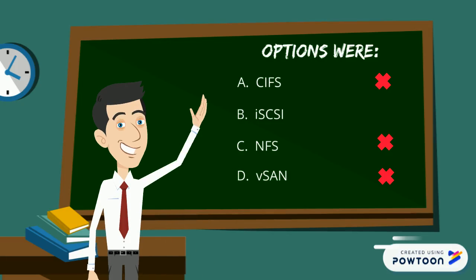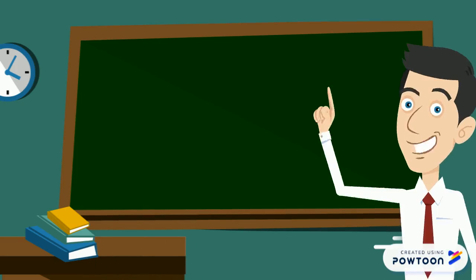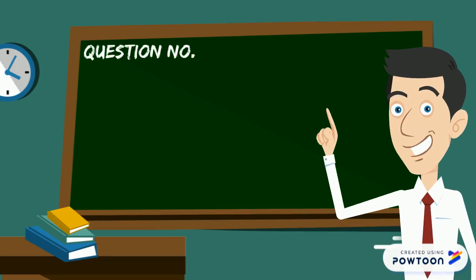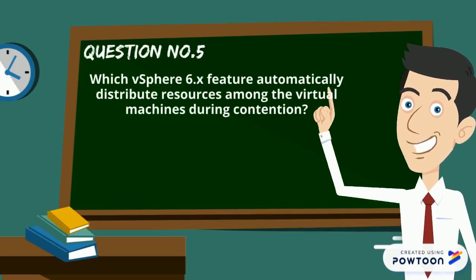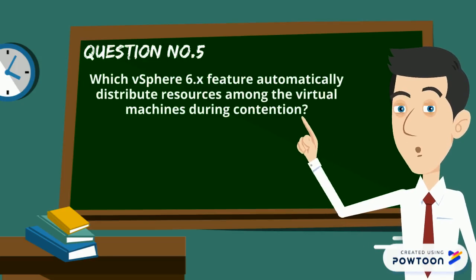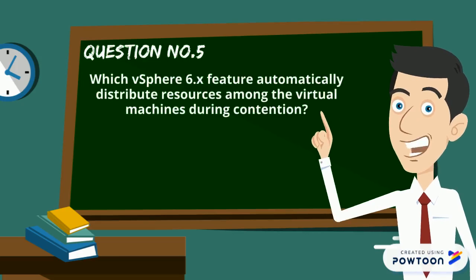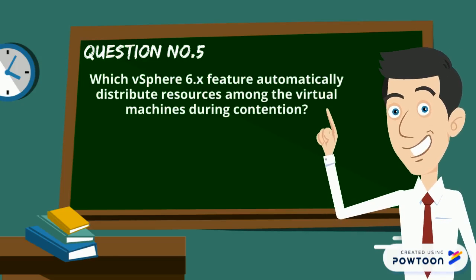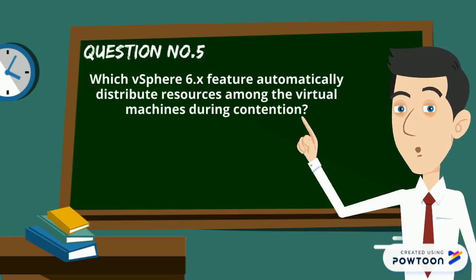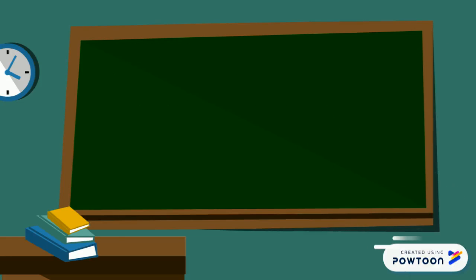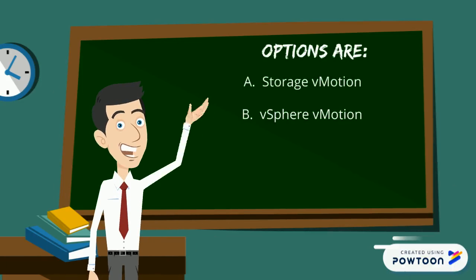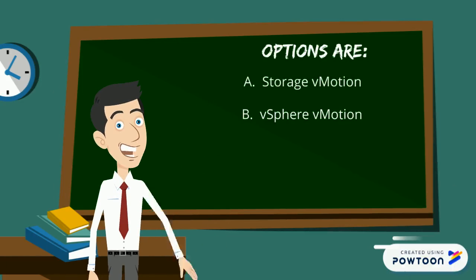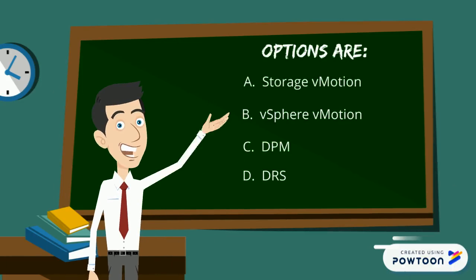So iSCSI is the only storage which supports RDM disks. Here is our question number 5: Which vSphere 6.x feature automatically distributes resources among virtual machines during contention? Your options are storage vMotion, vSphere vMotion, DPM, and DRS.